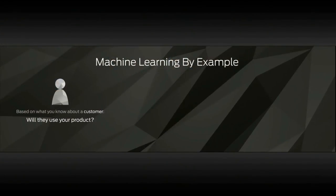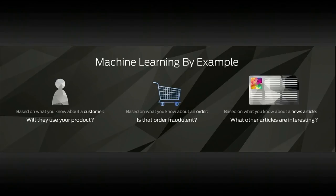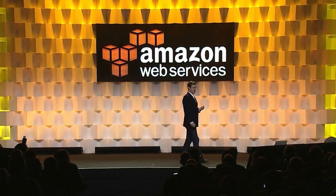Machine learning allows you to ask questions of data you probably already have on AWS. Based on what you know about a customer, will they use your product? You can segment your customer base for more targeted marketing. Based on what you know about a particular order, is it fraudulent, and what action do you want to take? Or, based on what people are reading on your website, what other articles will they find interesting — enabling more relevant recommendations.